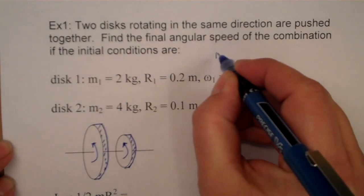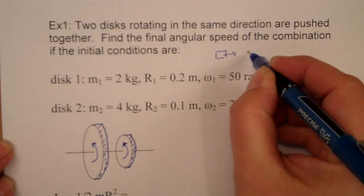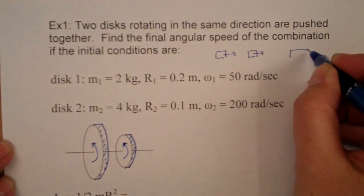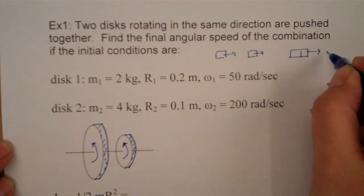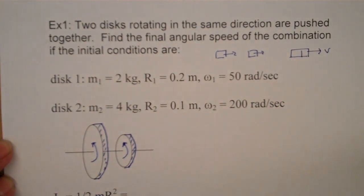So in a linear story, this would be two masses moving in the same direction, and they stick together, and we're asked to find the final combined speed. In this case, we're doing rotation.